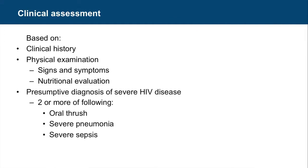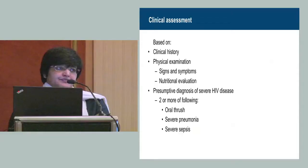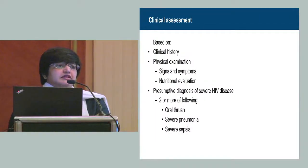Under the EID program, there is something called presumptive diagnosis. Morbidity and mortality is highest in children, especially those less than six months. If we see two of three symptoms — oral thrush, severe pneumonia, and severe sepsis — then it is necessary to link the baby to the nearest ART center. The ART medical officer will initiate the baby on ART. Our duty is to link the baby to the ART center, and the decision to start ART is made by the ART medical officer. This applies irrespective of the antibody or PCR result — if an HIV exposed baby is sick with two of these three symptoms, the ART medical officer will initiate ART.